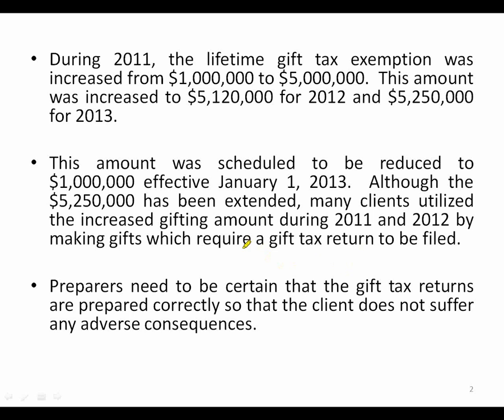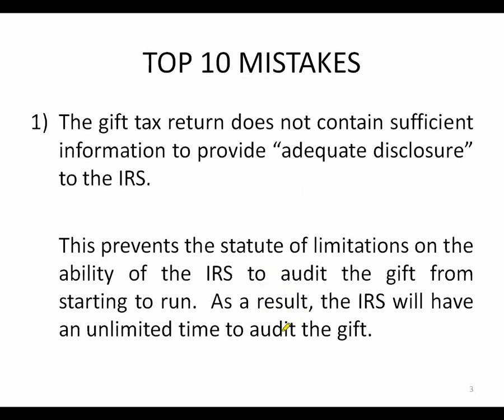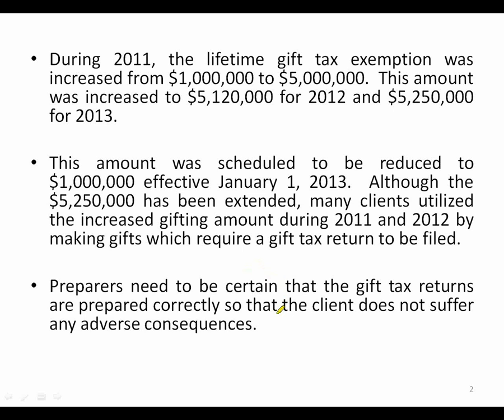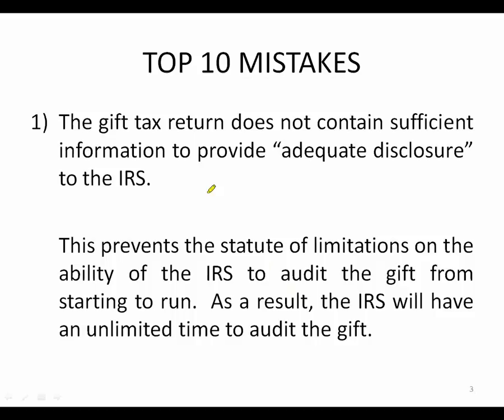Because so many clients made large gifts, we need to be certain gift tax returns are prepared correctly. We're going to touch on the ten most common mistakes we see. The most important thing a gift tax return can do is provide adequate disclosure to the IRS. If you don't, you prevent the statute of limitations from running. Typically the IRS has three years from the filing of a gift tax return to audit the gift; without adequate disclosure, that statute doesn't run.